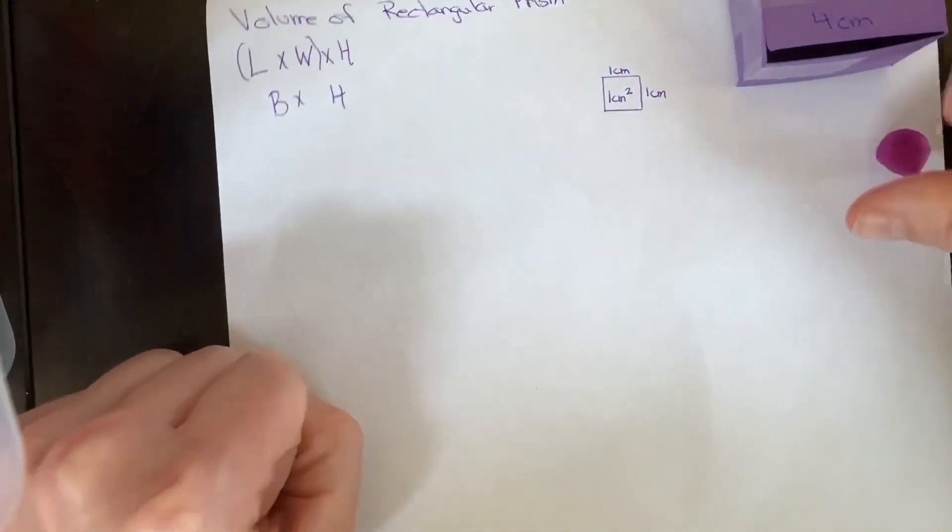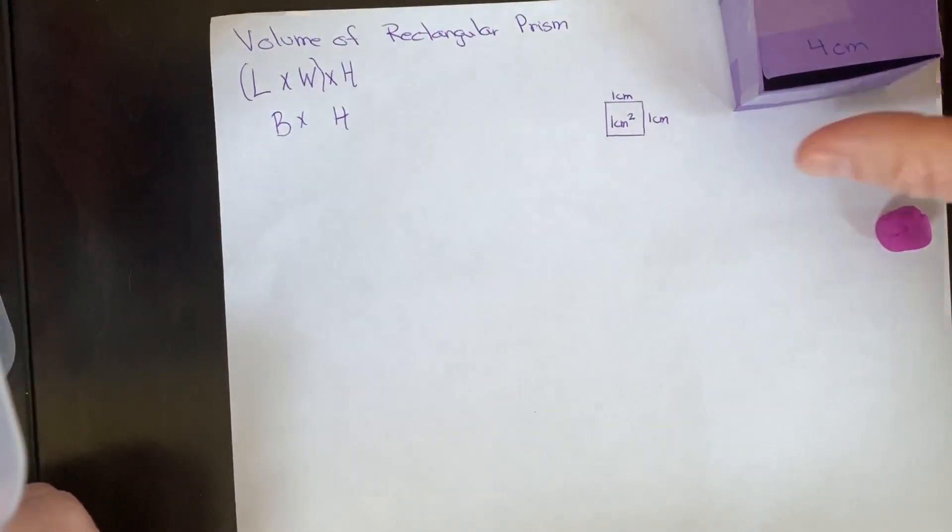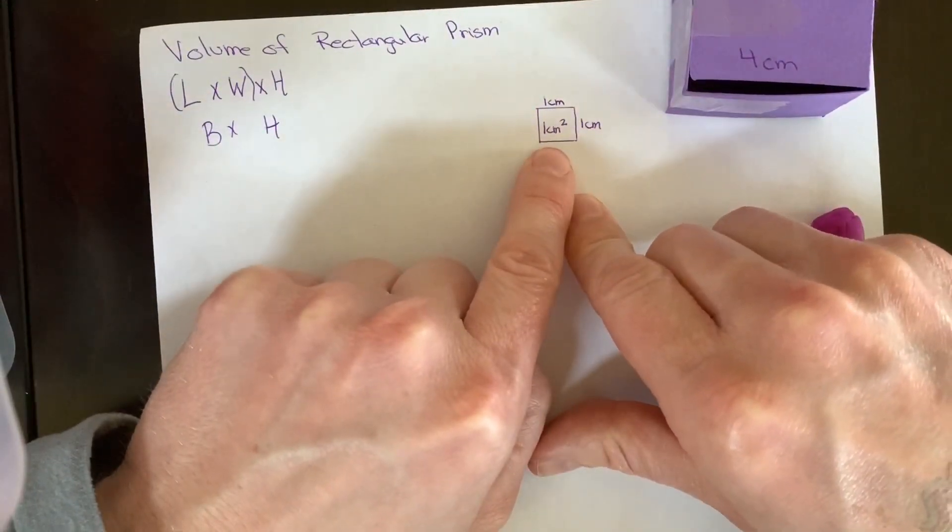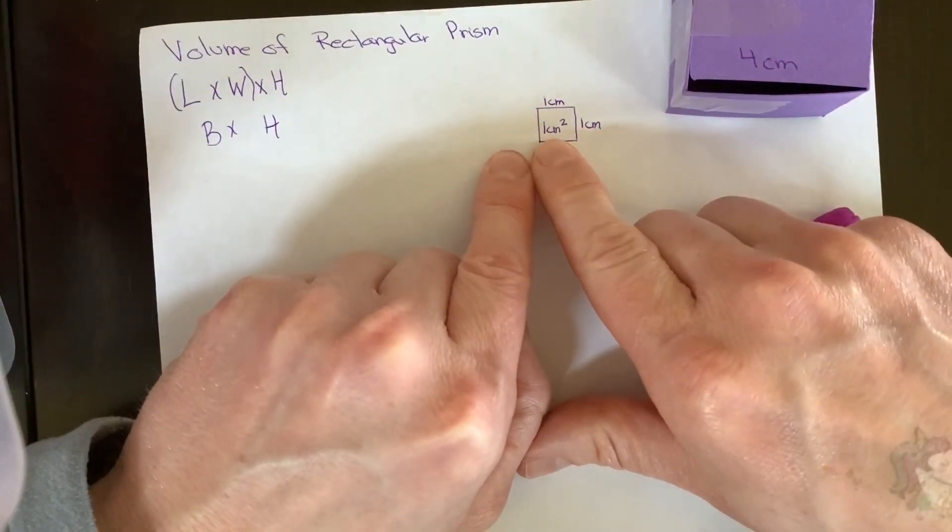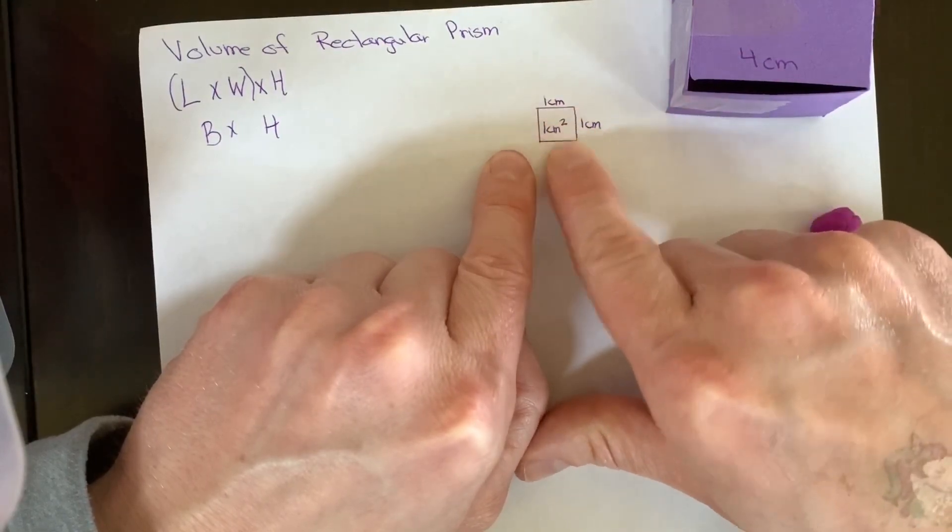I'm just going to go over a couple things, the difference between surface area and volume. So surface area is something that's flat. I've just got a little model here of one centimeter by one centimeter. That makes one centimeter squared. So flat things is squared.